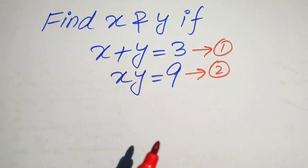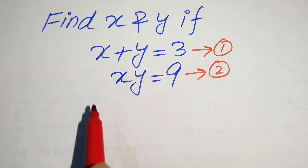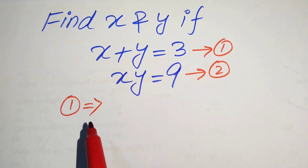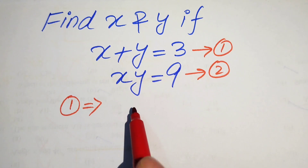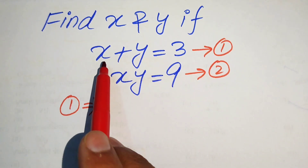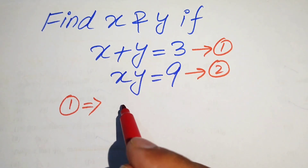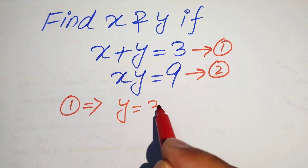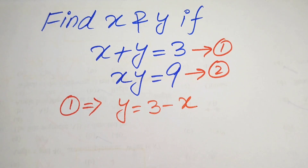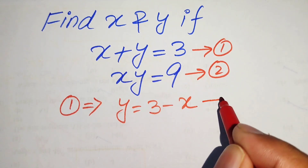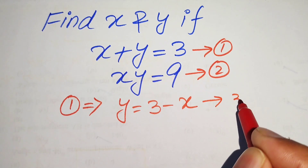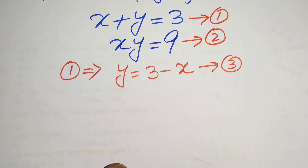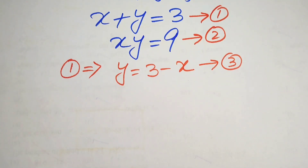First, we focus on equation number 1. We move x to the right-hand side, giving us y equals 3 minus x. We call this equation number 3.